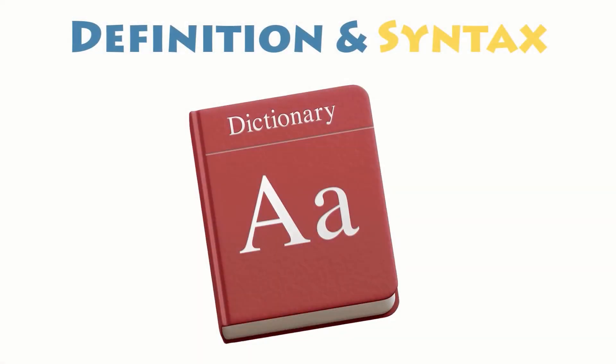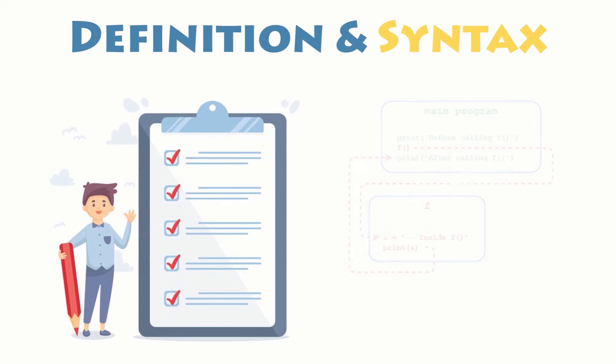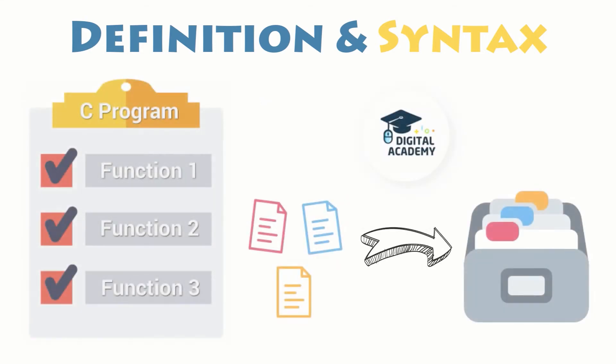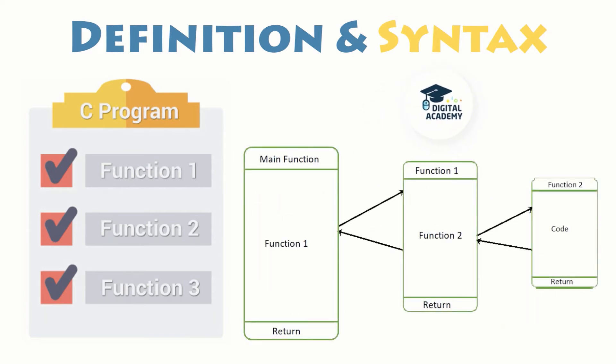What is a function in Python? In Python, a function is a group of related statements that performs a specific task. Functions help break your program into smaller and modular chunks. As your program grows larger, functions make it more organized and manageable.